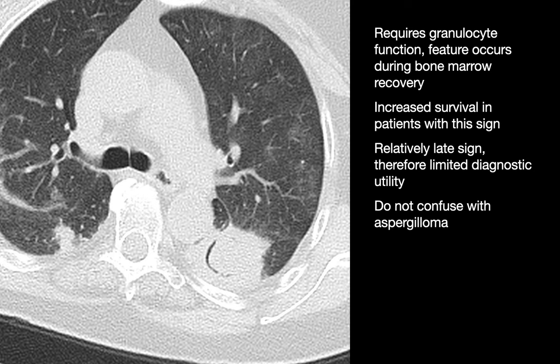Sometimes the interlobular septal component may not be conspicuous. Lepidic adenocarcinoma can sometimes present as a relatively isolated ground glass opacity. Organizing pneumonia can also present as an isolated ground glass opacity, though it's more common for organizing pneumonia to present with some element of consolidation. In immunocompromised folks, we think first of pneumocystis infections and opportunistic viral infections like CMV, HSV, or RSV.